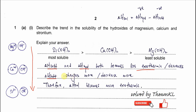Combining these two statements using the equation: when going down the group, the lattice energy decreases more, so this value becomes smaller. The hydration enthalpy decreases less, meaning it is more exothermic. Subtracting a smaller negative value means adding a smaller positive correction, so the overall ΔH solution becomes more exothermic. Therefore, the ΔH solution of strontium hydroxide is more exothermic than that of magnesium hydroxide.